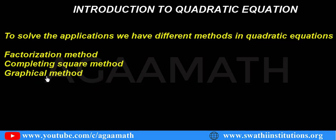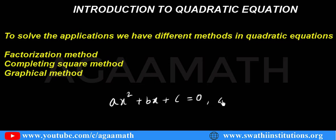We also have to know what is the quadratic equation and how it is written. Generally, the general form of a quadratic equation is ax² + bx + c = 0, where a is not equal to zero. This is the general form of a quadratic equation to remember. In the next video, we see how it is used.